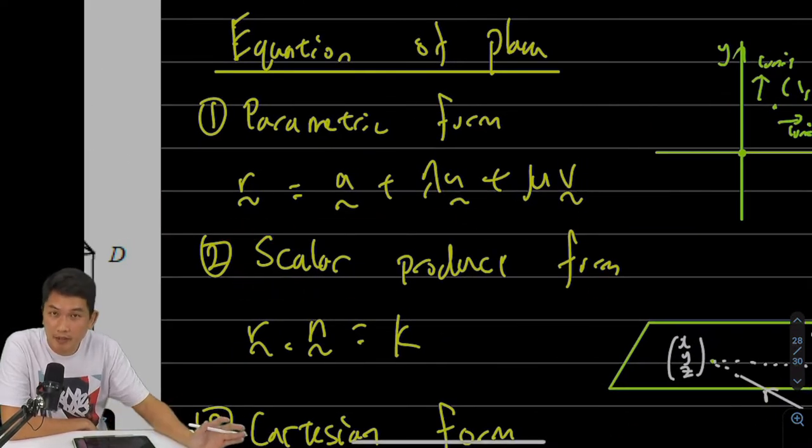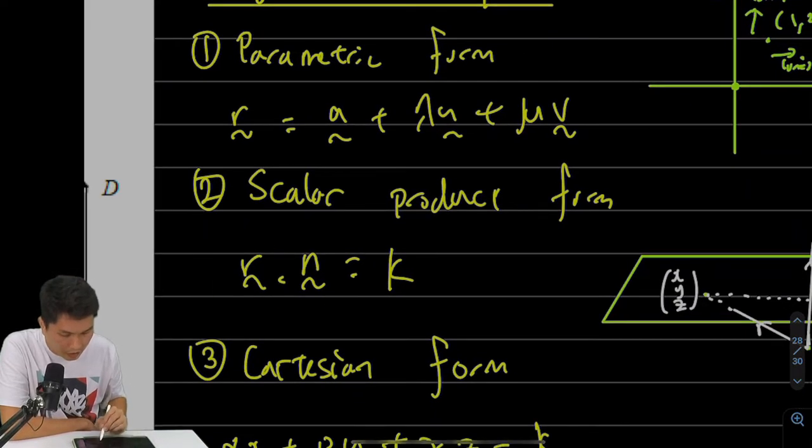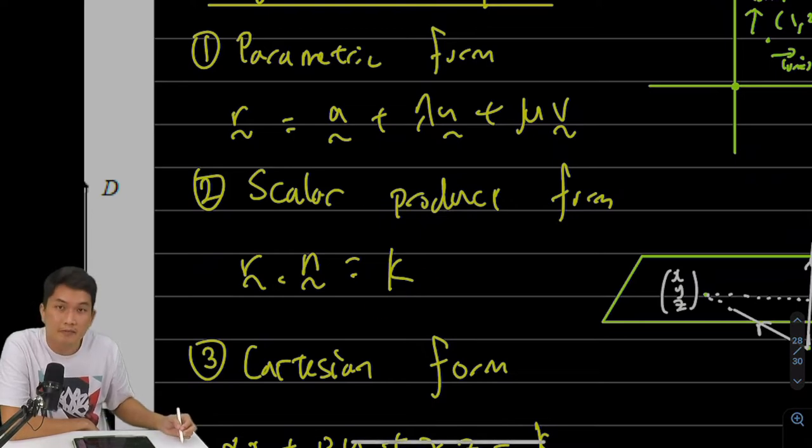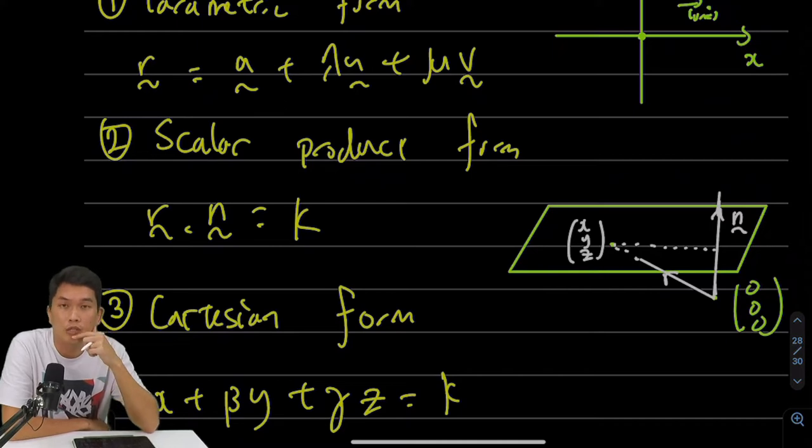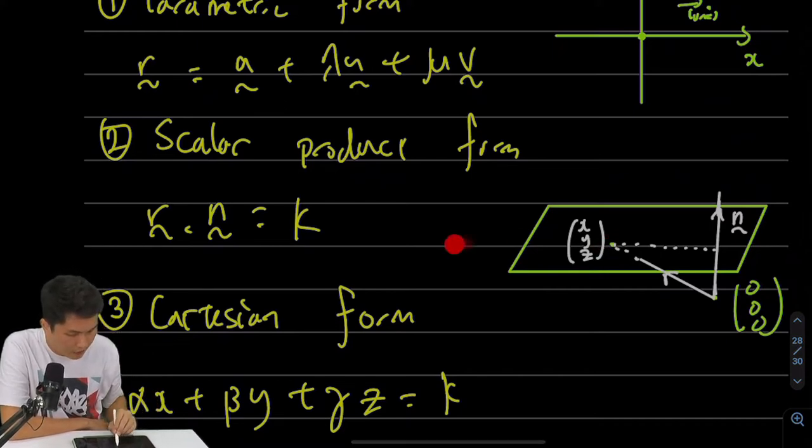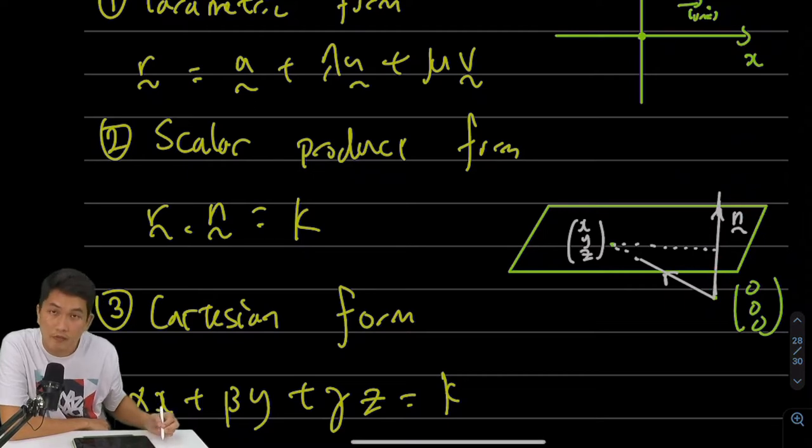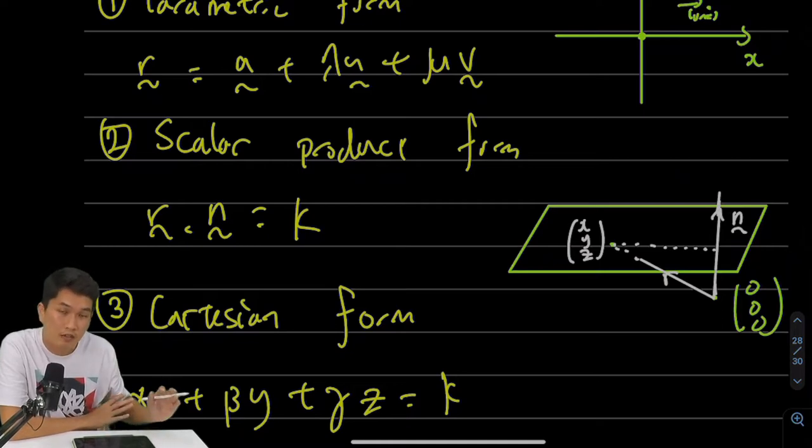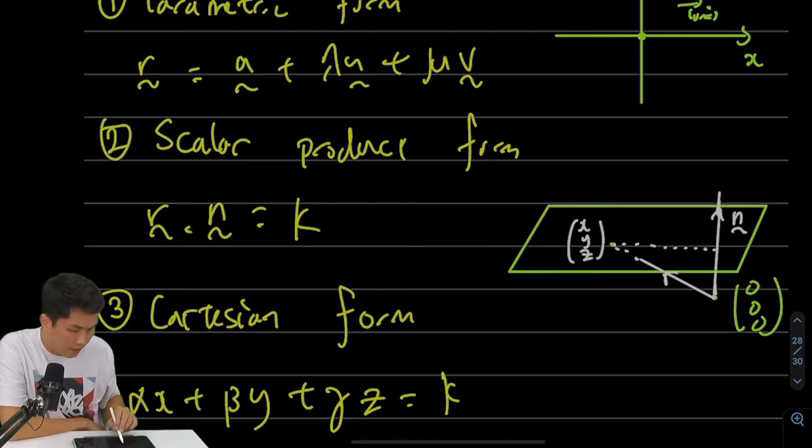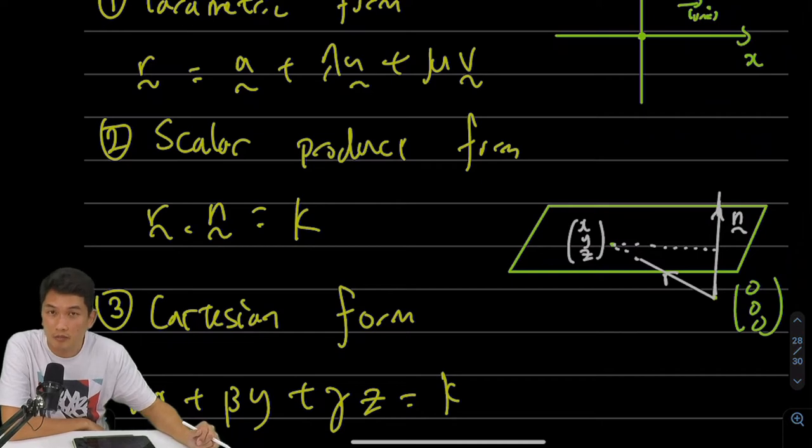Next, we have the scalar product form, which is very compact and useful. It states that any point on the plane, when you dot it with the normal vector, gives a fixed constant k. This is strange—even if I choose a point with huge coordinates, why does it still give a constant? By now you should know that the dot product gives a perpendicular distance. If you take any point, even very far away, you're finding a perpendicular distance—actually, a multiple of this distance, depending on the normal vector. So you're getting a multiple of the plane's distance from the origin. If the plane contains the origin, then the dot product will always be zero.